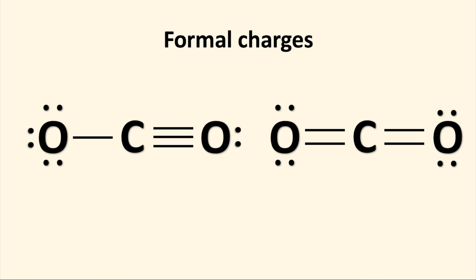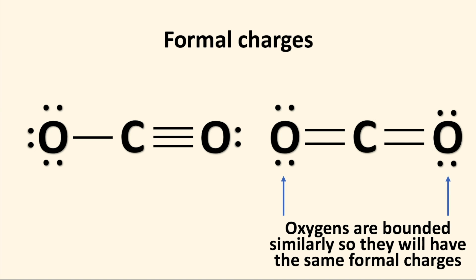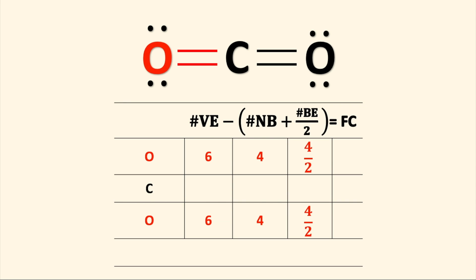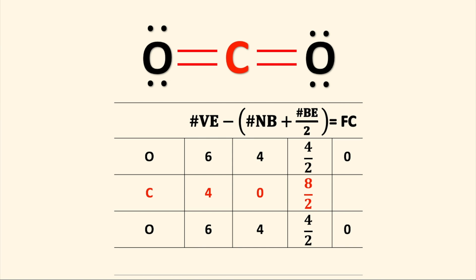Let's go ahead and calculate the formal charges for the second structure, which has carbon double bonded to two oxygen atoms. It is important to note that both oxygens are bonded the same to carbon. This means both oxygens will have the same formal charges. Oxygen has six valence electrons, four non-bonding electrons, and four bonding electrons, which equates to a formal charge of zero. Remember, both oxygen atoms will have the same formal charge because they are both bonded similarly to carbon. Carbon has four valence electrons, zero non-bonding electrons, and eight bonding electrons. The sum of all the formal charges is equal to zero.